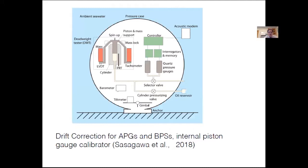The first system to accurately remove drift from pressure gauges was built by Glenn Sasagawa and Mark Zumberge. It uses a deadweight tester within the pressure case to produce an accurately known pressure signal. Your pressure gauges normally look outside the case measuring seawater pressure. Periodically, perhaps once a month, you spin up this system, switch valves so the gauges measure internal pressures, and use that to measure drift, then subtract it from your measurements.